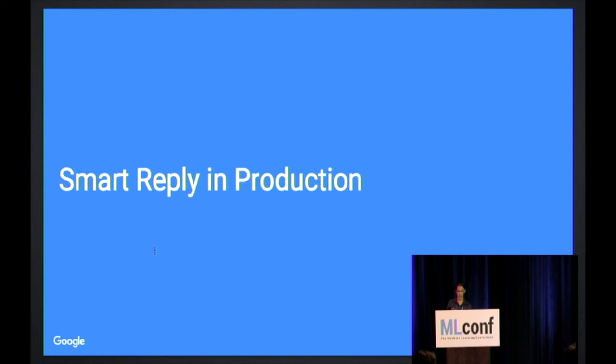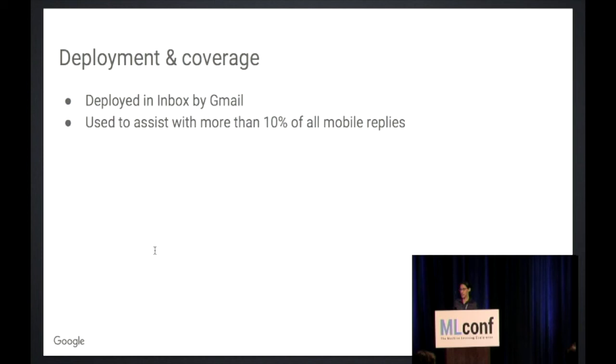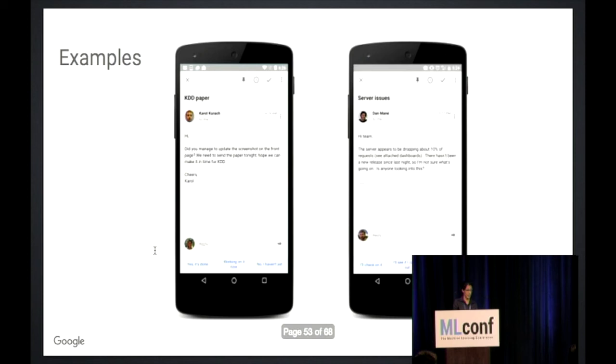So, smart reply in production. Does this actually work? Well, we did deploy it last year. If you use Inbox by Gmail, then you should be seeing these. Probably our clearest metric of success here is that this feature is now used to assist in more than 10% of mobile replies in Inbox. So people are using it. Another way that we understand success is just looking at our own emails and seeing, I feel like this is actually more convincing to me to see it actually saying sensible things. This first email says something about asking someone whether they managed to complete some task on some group project. The suggested replies are things like 'yes, it's done,' 'working on it now,' or 'I haven't yet.'